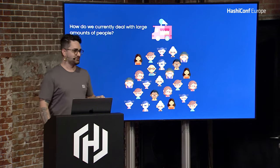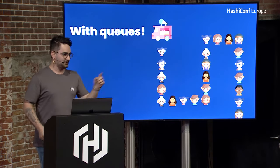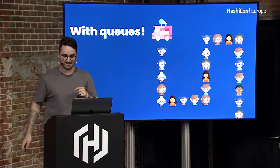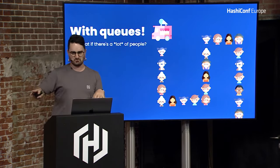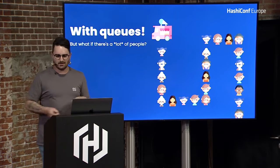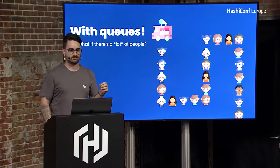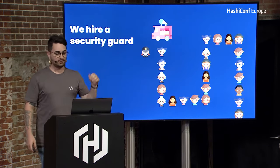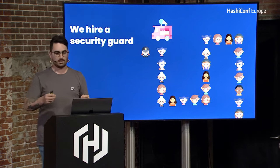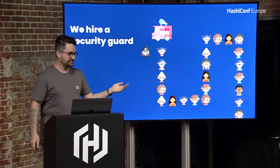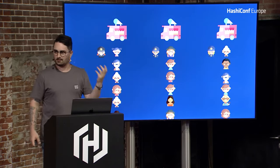More ice cream trucks — that's true, but before getting new ice cream trucks we have to deal with that problem first. We create queues. We can start creating queues, but what happens if we really have a lot of people? There are kids, and people treat kids poorly, or try to cut the line. We want to ensure that the first person arriving at the ice cream truck will be the first person to get served. So we hire a security guard — that girl will make sure that everyone gets served in the correct way. At a certain point, a single queue is not enough, so we get more ice cream trucks, more guards, and we can scale in many different ways from now.